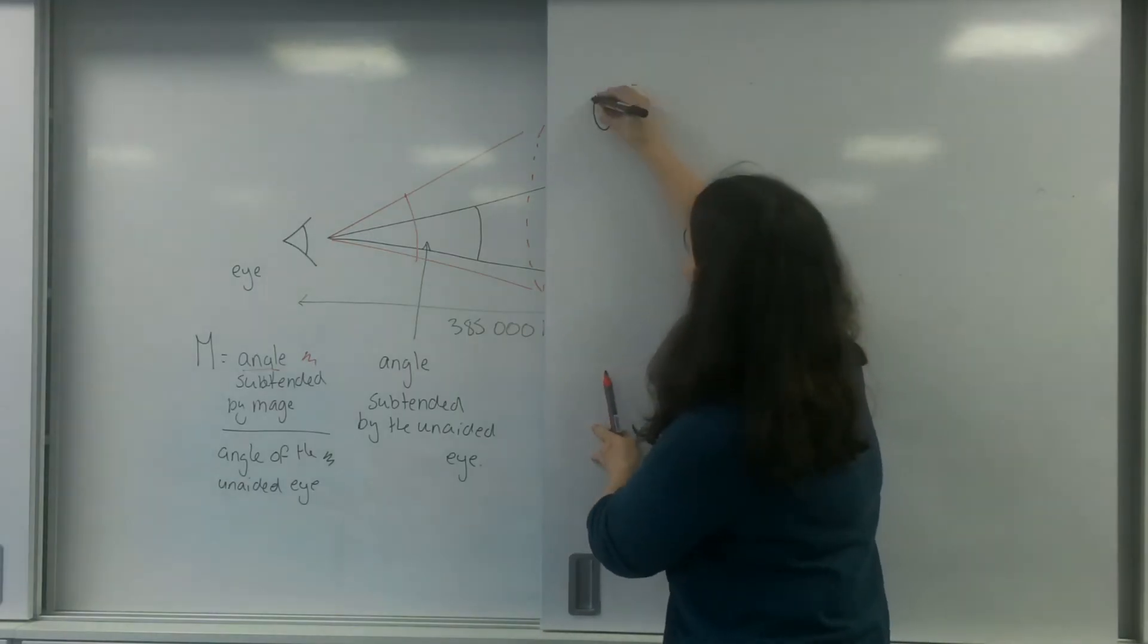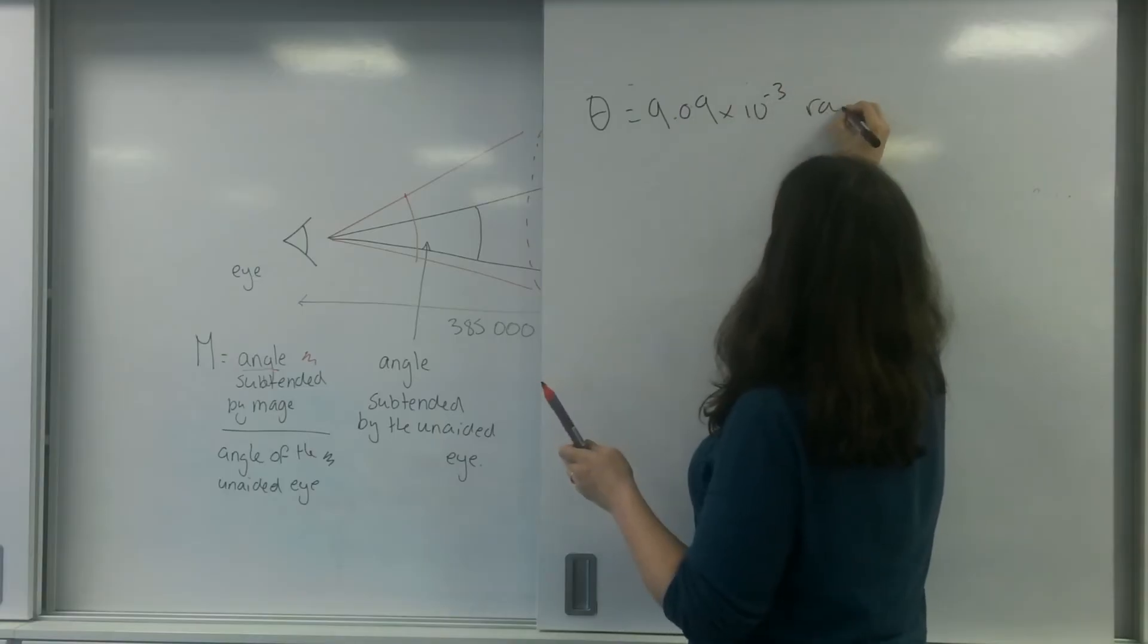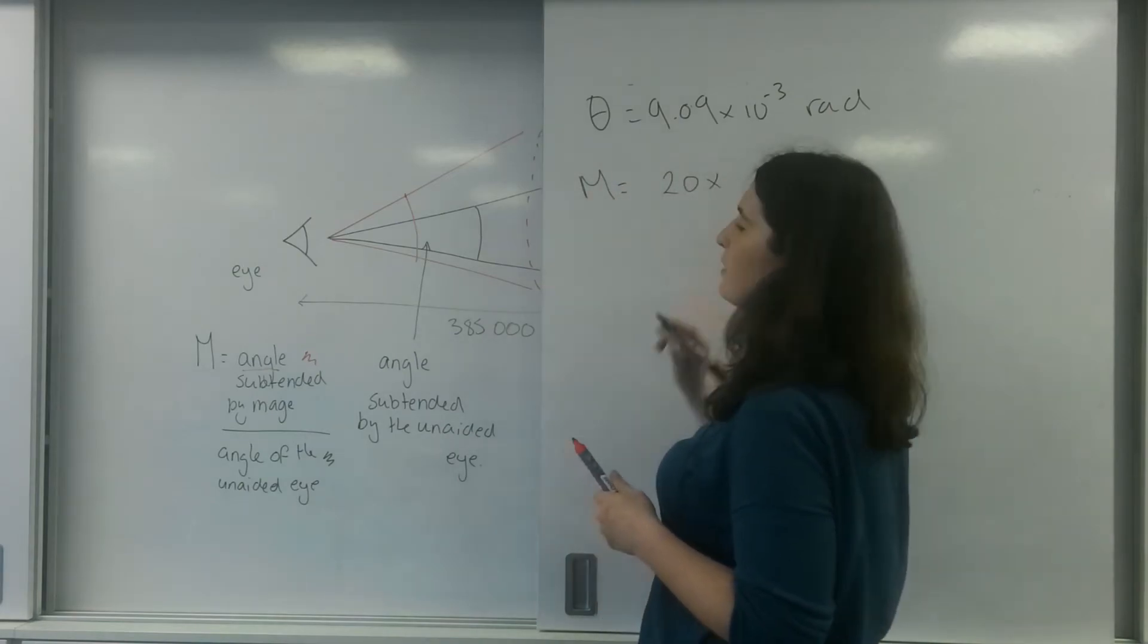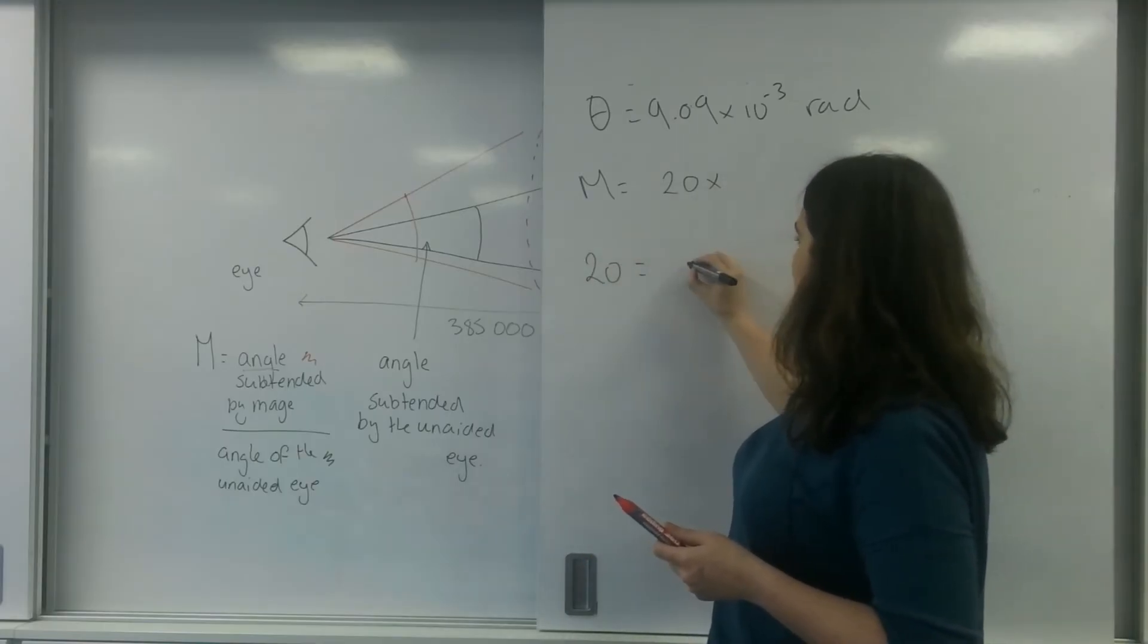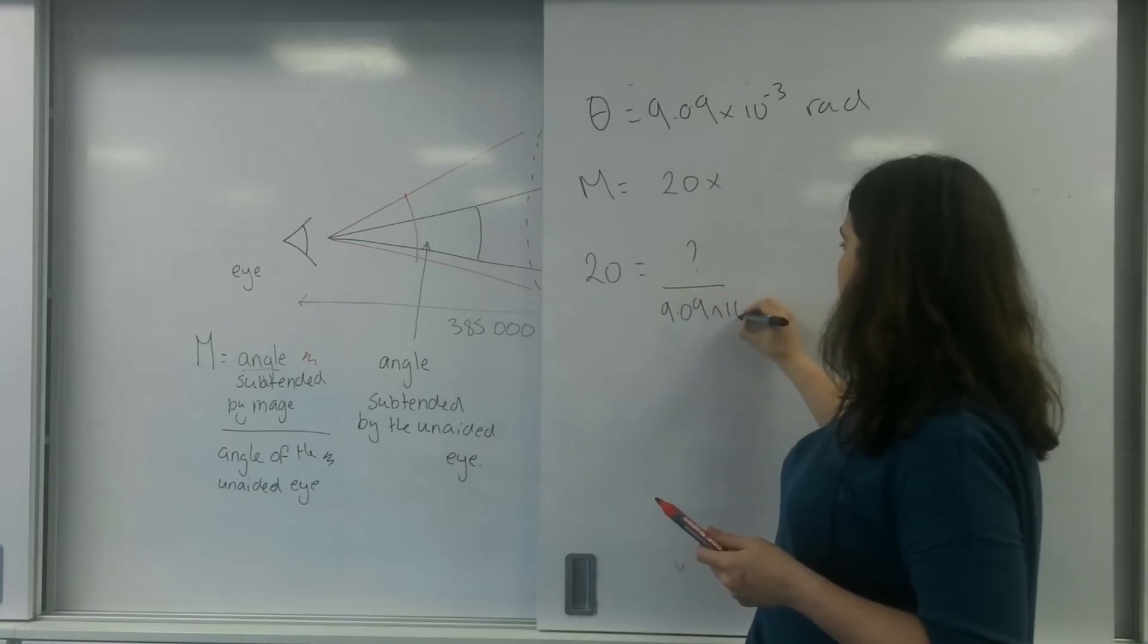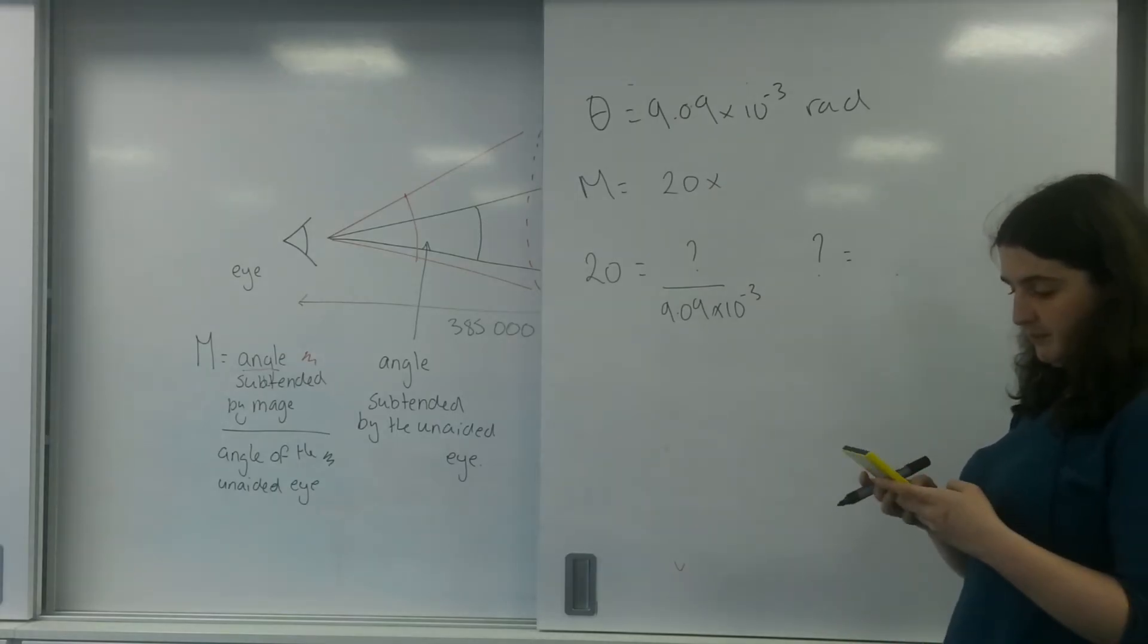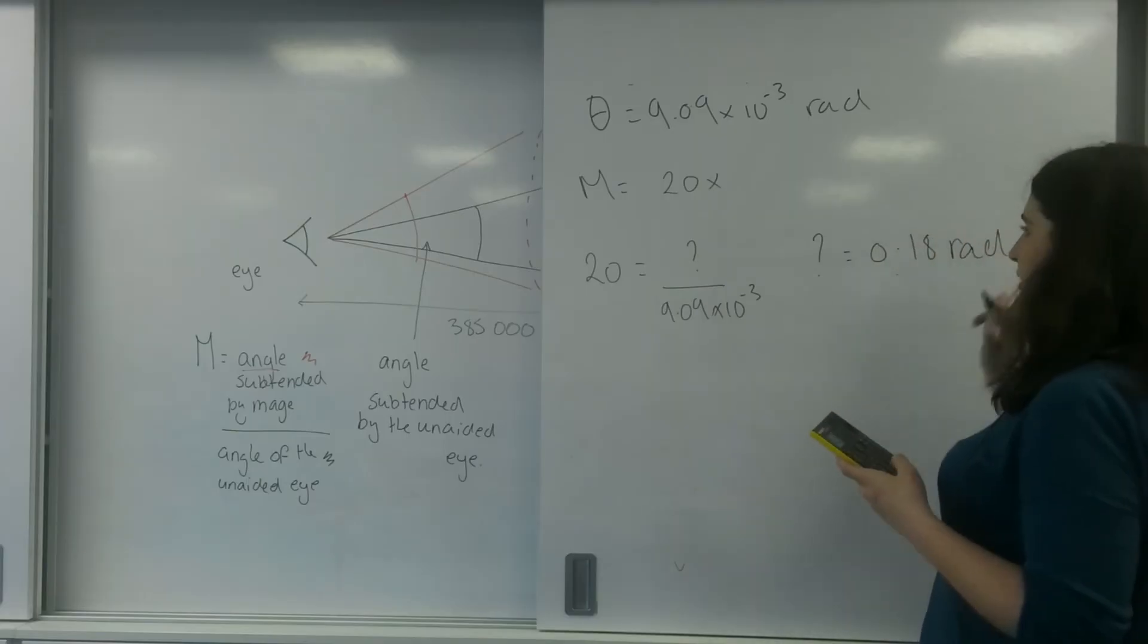So the angle is 9.09 times 10 to the minus 3. If I had a magnification of, say, 20 times, I know if I had that, I've got 20 equals the angle of the image over 9.09 times 10 to the minus 3. So the angle of my new diagram would be this.